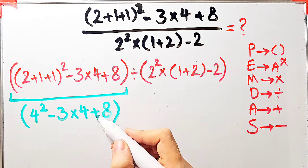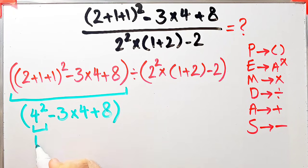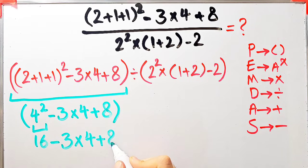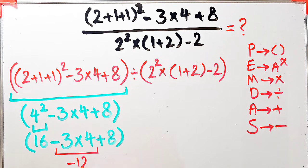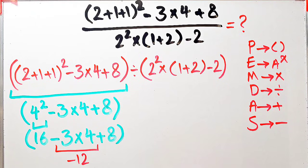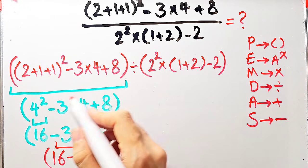In this step we have exponent, subtraction, multiplication, and addition. First we simplify the exponent: 4 to the power of 2 equals 16. Now we have 16 minus 3 times 4 plus 8. Next, 3 times 4 equals 12 (multiplication before subtraction). So inside this parenthesis: 16 minus 12 equals 4, and 4 plus 8 equals 12. The result of this parenthesis equals 12.